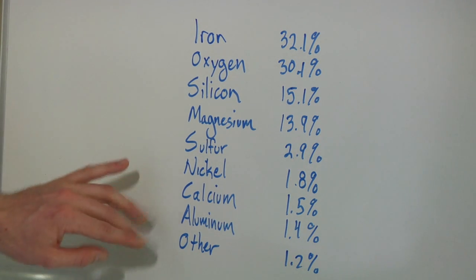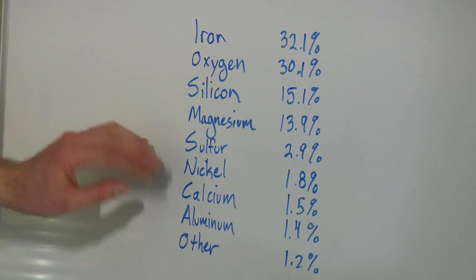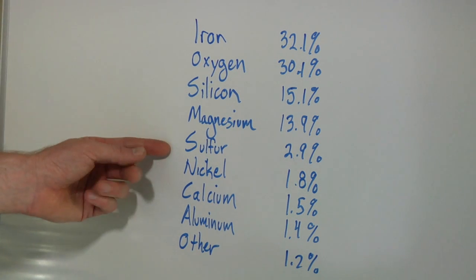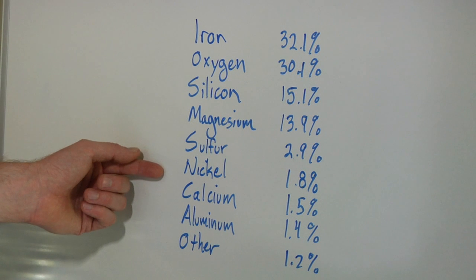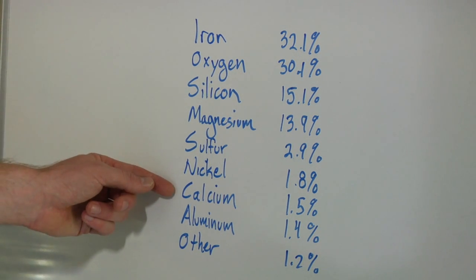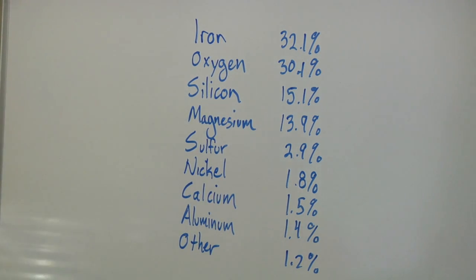You also have four additional elements that occur in much smaller amounts. Sulfur is at 2.9%, nickel is at 1.8%, calcium is 1.5%, and aluminum is 1.4%, with all the other elements only taking up 1.2% of the Earth's composition.